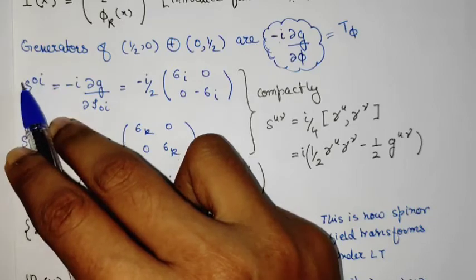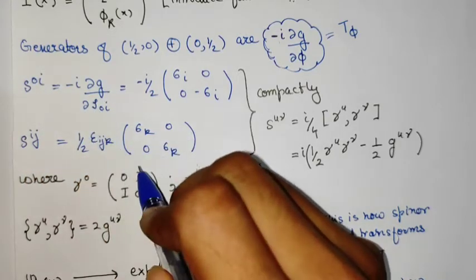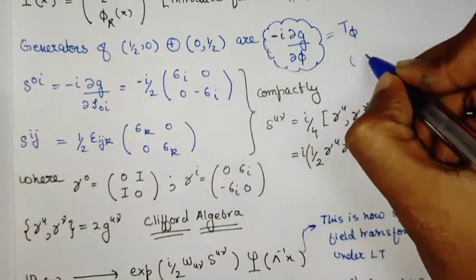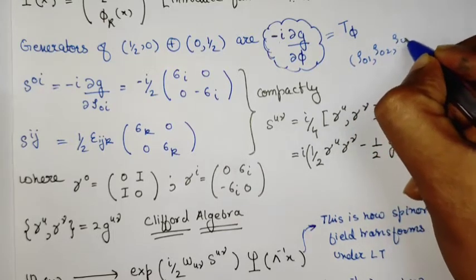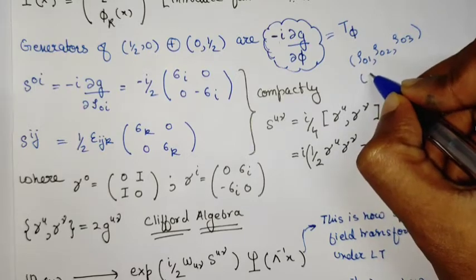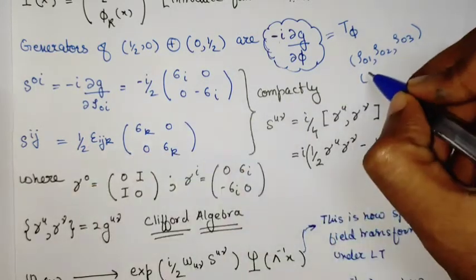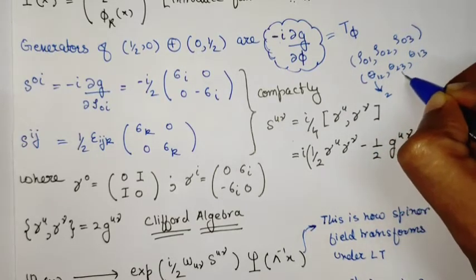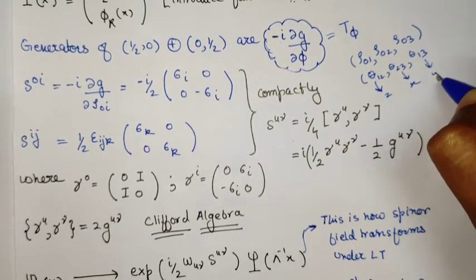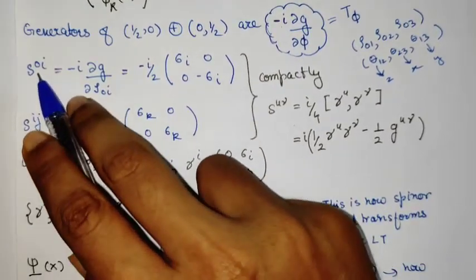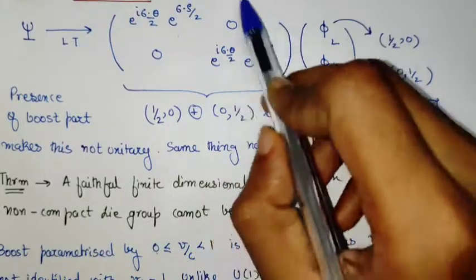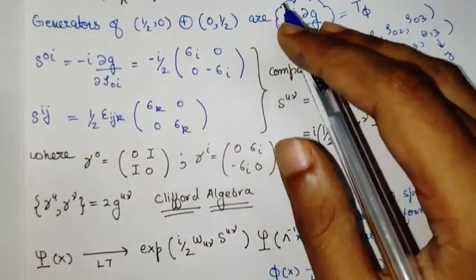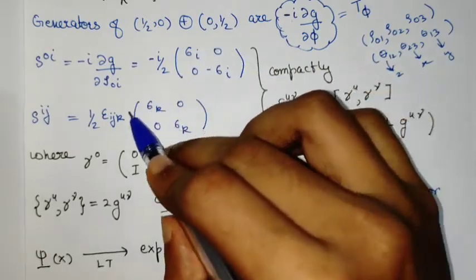We start by writing the generators of the boost, differentiating with respect to the boost parameters. There are three boost parameters, which can be given antisymmetric notation: rho-01, rho-02, and rho-03. Similarly, the three rotation parameters are theta-12, theta-23, and theta-13, corresponding to rotations about the Z, X, and Y axes respectively. If we differentiate the representation with respect to these parameters, we get the generators — the generator of boost and the generator of rotation.